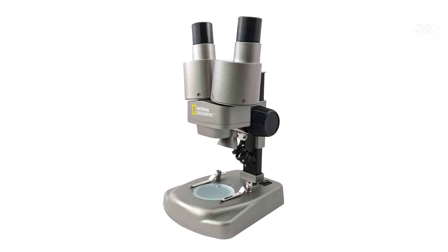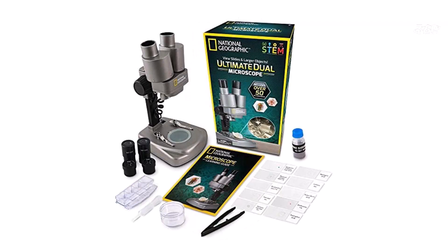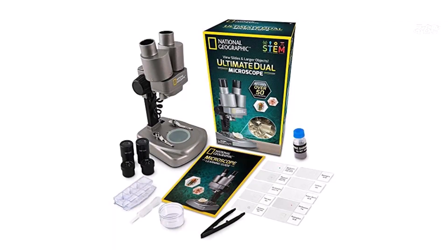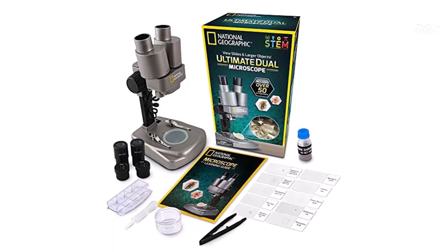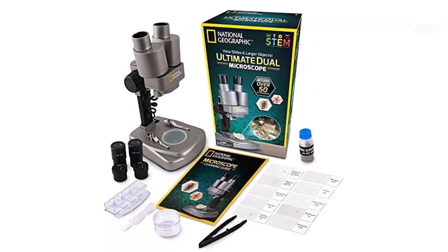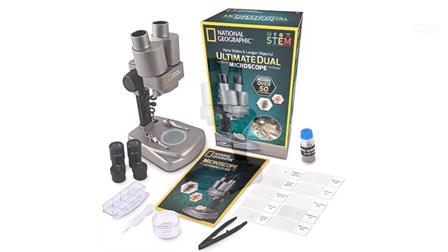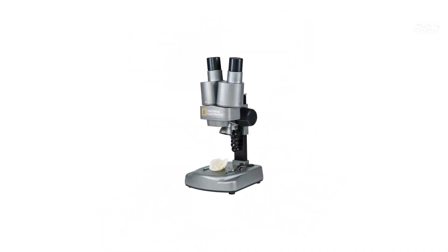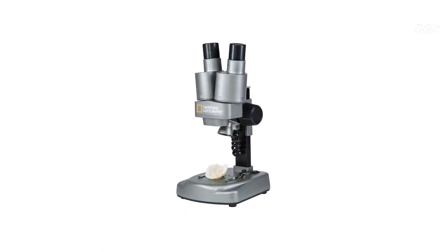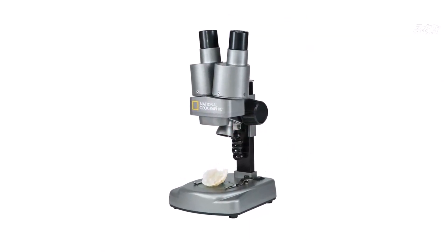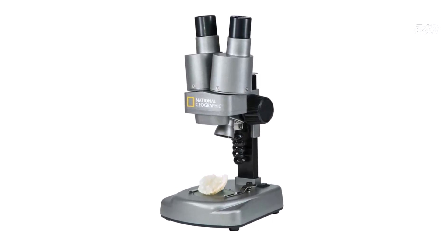This microscope comes with over 50 accessories, making it a complete kit for scientific exploration. The package includes a curated set of 10 prepared slides showcasing a variety of biological specimens. Additionally, it provides blank slides, covers, tweezers, and an eyedropper, allowing children to create their own slides and conduct personalized experiments. The inclusion of a petri dish for plant labs and a mini geode adds further excitement and educational opportunities.